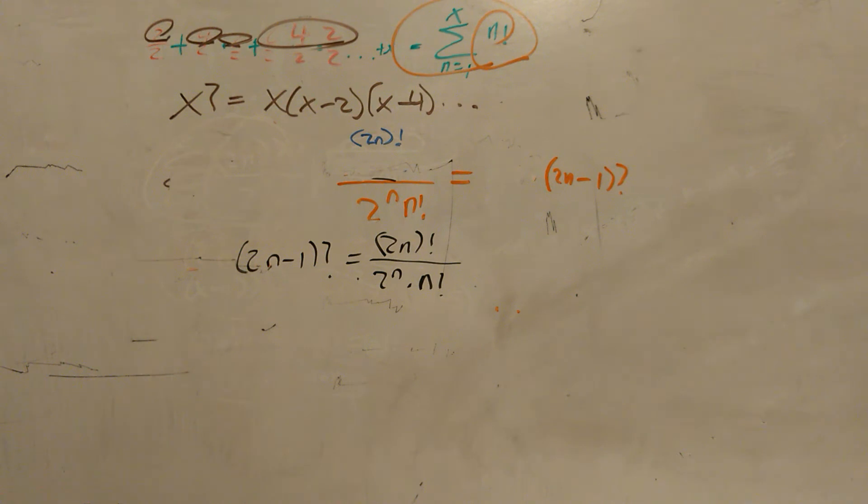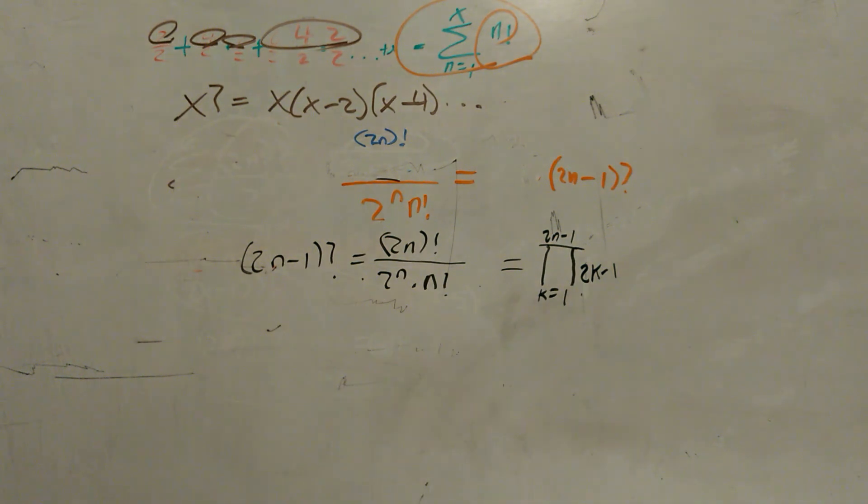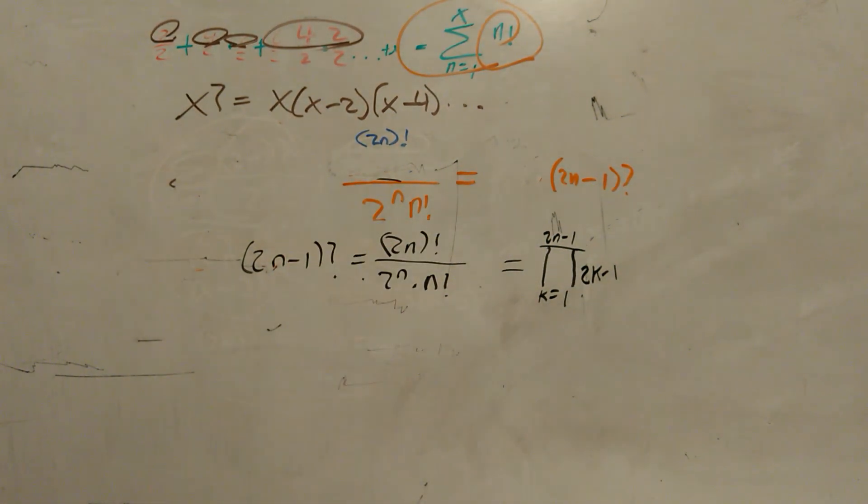One thing you may know is that a product of the sequence can be represented by a capital pi. So just as a side note, we can also write it as this, but with respect to Taylor series, we want to have it in terms of just factorials.